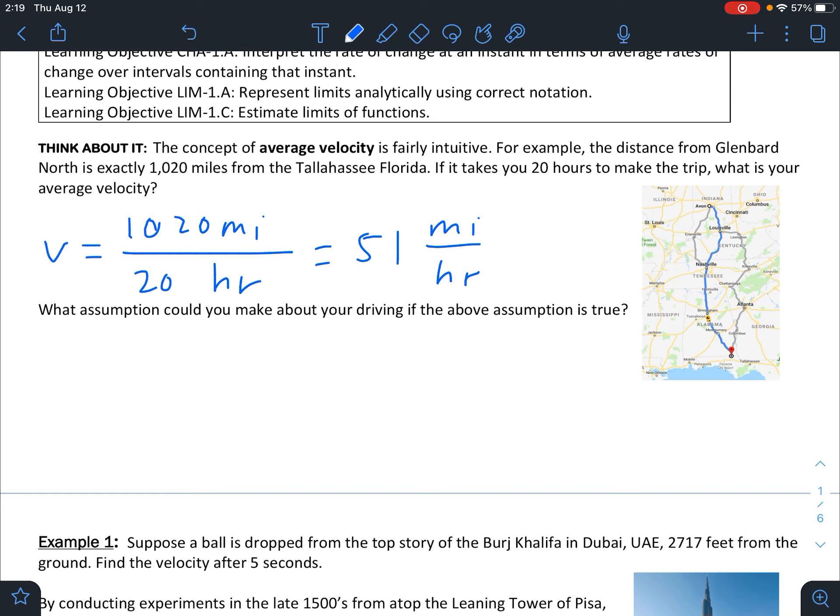But what assumption can we make about our driving if the assumption was true? Well, if our average velocity was 51 miles per hour the whole way through, that's a pretty good average velocity. That means we probably never got stuck in traffic very much, didn't have to stop very often, definitely didn't stop for a couple hours to take a nap. We basically made very good time, very good velocity the entire way. We were probably headed towards Tallahassee the entire way, never had to turn around due to any construction.